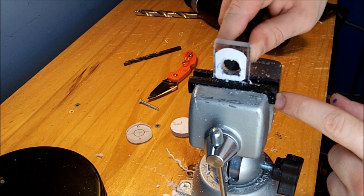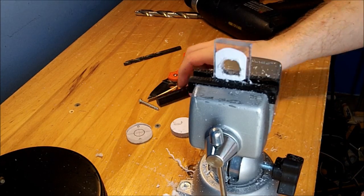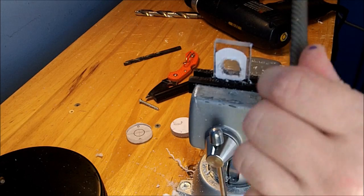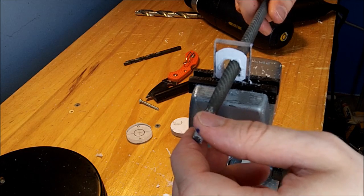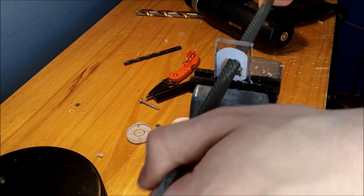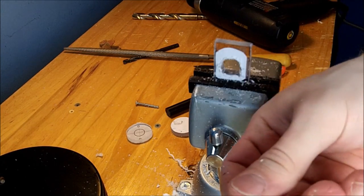If it doesn't fit, this isn't a problem. Simply take your rat tail file and file out the sides and the top a little bit until it does fit. And sand it clean.